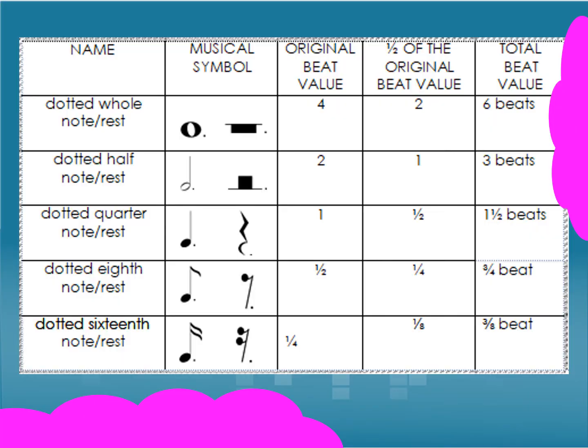Let us examine this table of the different dotted notes and rests and their equivalent values. The first row refers to the dotted whole note and rest. The original beat value of the whole note and rest is four, and one half of the original value is two, so the total beat value of a dotted whole note and rest is equivalent to six beats.